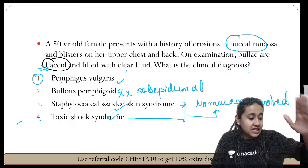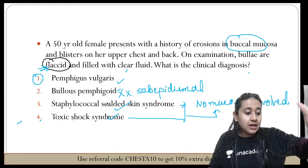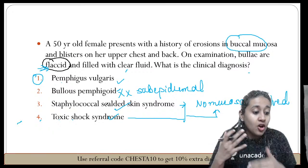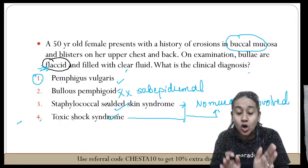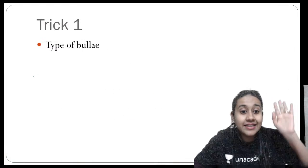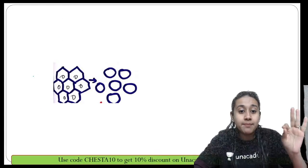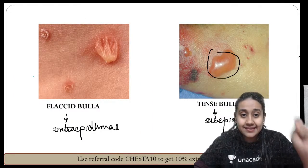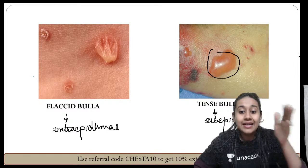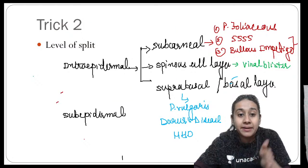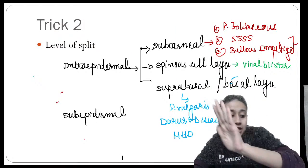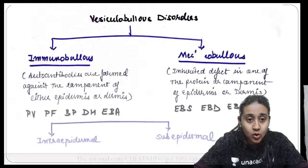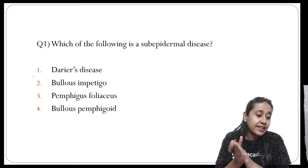That is how we arrive at option one — pemphigus vulgaris. Trick Number One: type of bullae — flaccid or tense. Flaccid means intraepidermal, tense means subepidermal. I have given you all the examples for intraepidermal disorders.